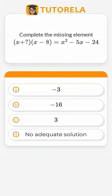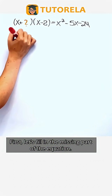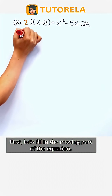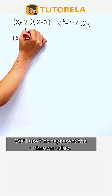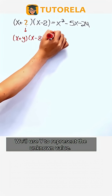Complete the missing element: the quantity x plus question mark, times the quantity x minus 8 equals x squared minus 5x minus 24. First, let's fill in the missing part of the equation. We'll use y to represent the unknown value.